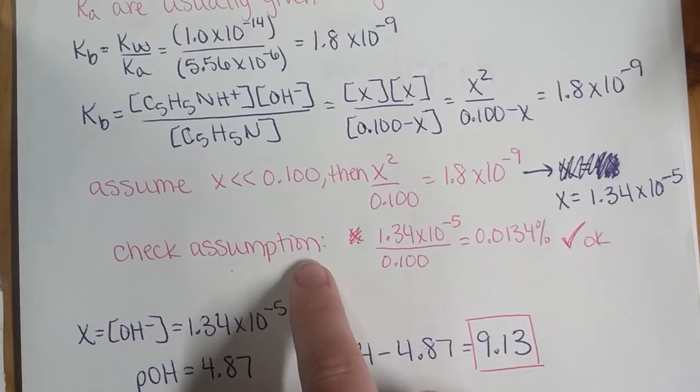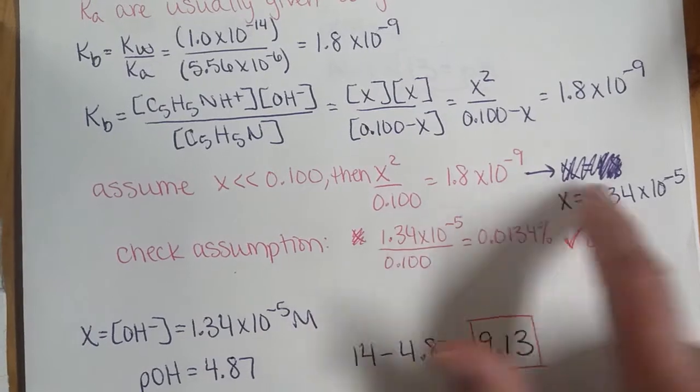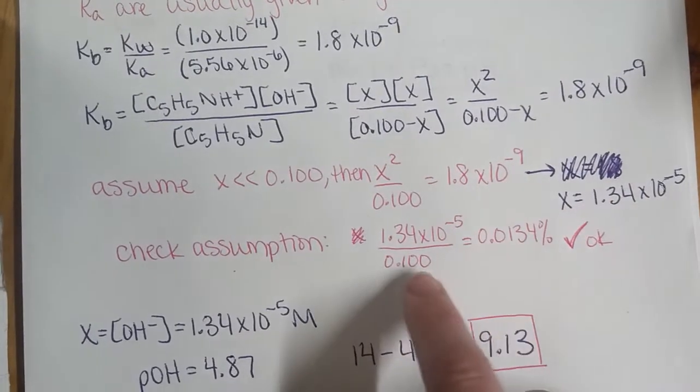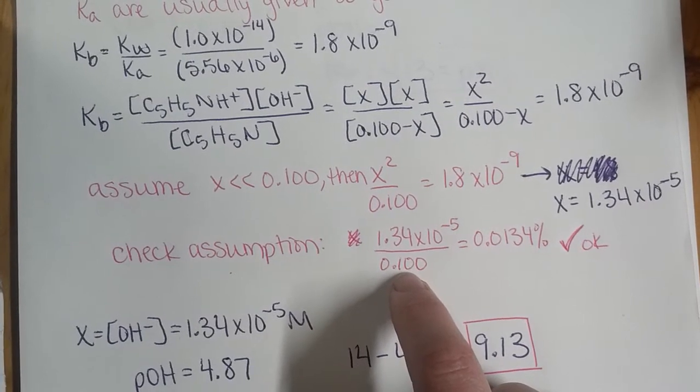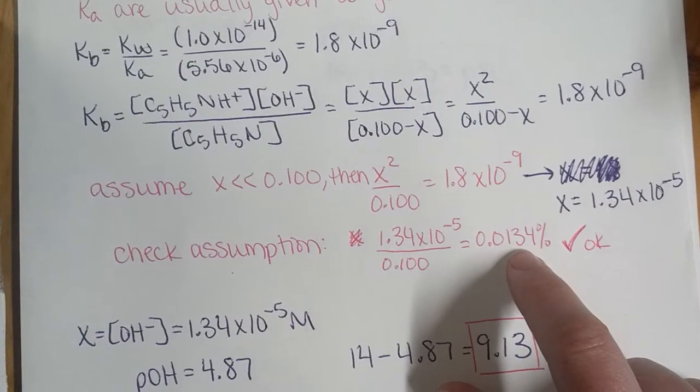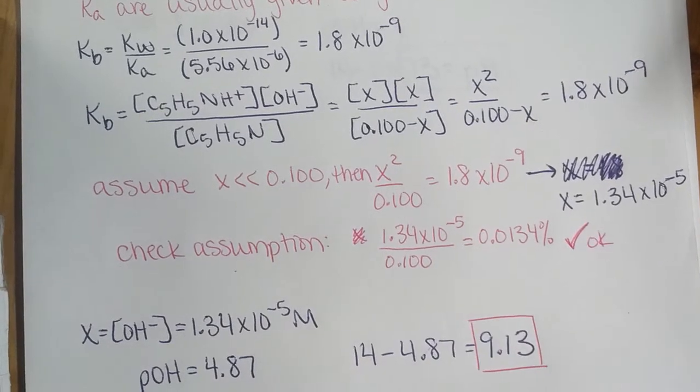We then check our assumption. We have 1.34 times 10 to the negative 5, that's our X value, divided by the original concentration, 0.100. And that's definitely less than 5%, so our assumption is okay.